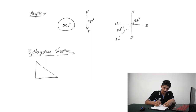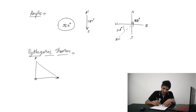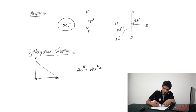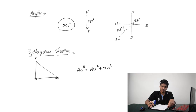The next point is Pythagoras' theorem. As you all know, if there is a triangle A, B, C, the hypotenuse of the triangle, that is AC, is given by: AC squared is equal to AB squared plus BC squared. You must know all these points in order to solve the problems on Directional Sense.